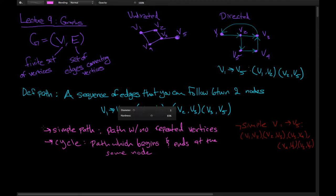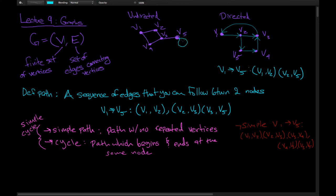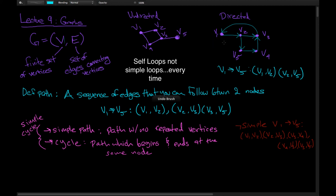From these two you can define a simple cycle, which is a cycle that has no repeated vertices — something that starts and ends at the same node while visiting no vertex twice. Also note that we haven't had any self-loops in the graphs we've drawn. A self-loop would be where you exit one node and re-enter it along some path. In general we don't consider self-loops, and I'll specifically tell you when we are.